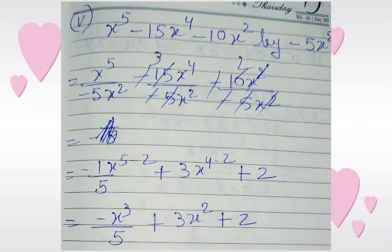Sub-part 5: x to the power 5 minus 15x to the power 4 minus 10x squared divided by minus 5x squared. First we divide x to the power 5 by minus 5x squared and get minus x cubed divided by 5. Then we divide minus 15x to the power 4 by minus 5x squared and get 3x squared.